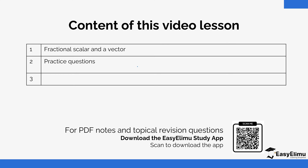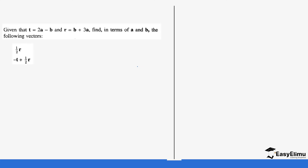For today we are going to work with the fractional scalar. Given that t = 2a minus b and r = b plus 3a, this is the question we also worked out in previous lessons with positive and negative scalars. Now we are going to work with fractions. Find in terms of a and b the following vectors: (a) r, (b) half r.